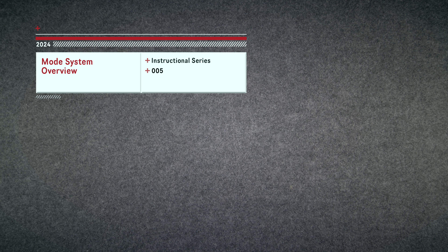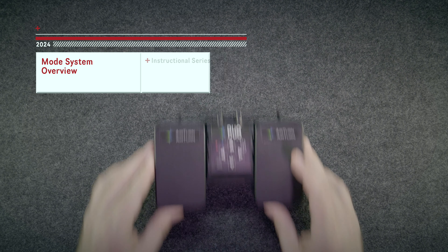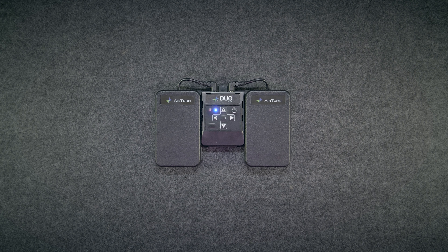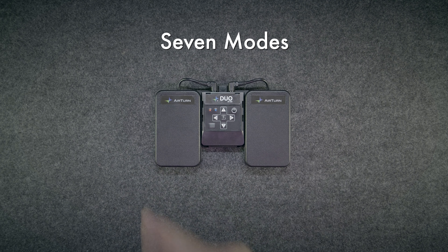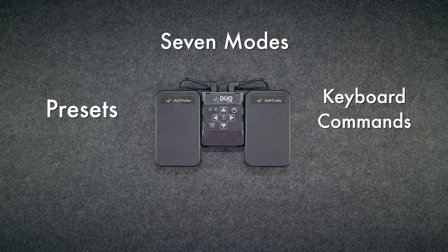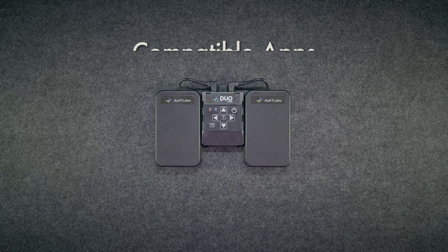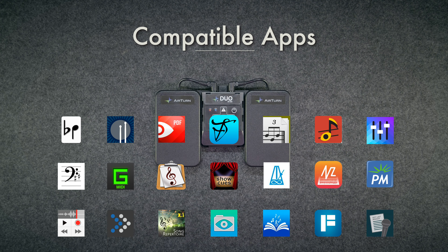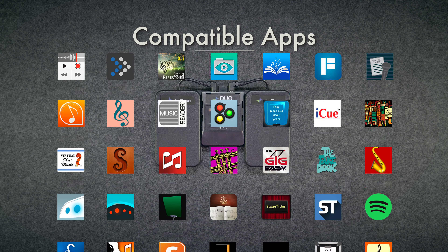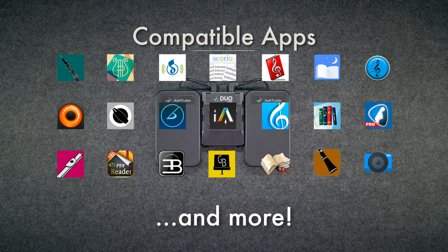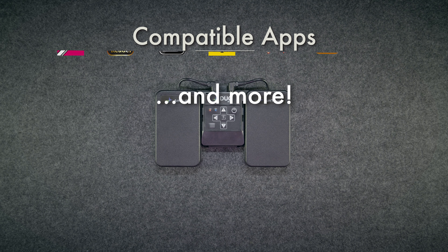Hello! In this video, we'll provide an overview of AirTurn's mode system. Every AirTurn pedal comes pre-programmed with seven modes. They are presets with specific keyboard commands assigned to the individual switches. The modes are designed to work with a wide variety of apps. You can change modes as needed when switching from one app to another.